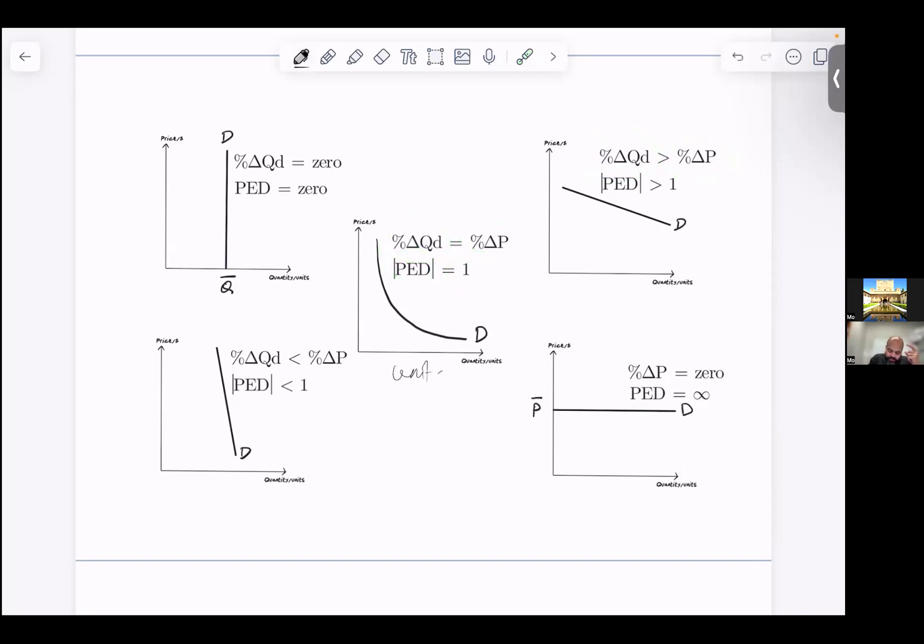I started with that because that's somewhere in the middle of the spectrum. Now remember, quantity demanded and price move in opposite directions, and that's why PED will always be negative. So we look at the absolute value – that's why here absolute value is one.